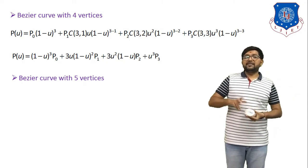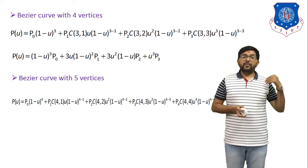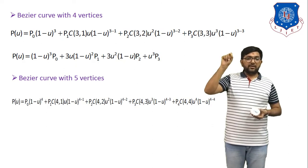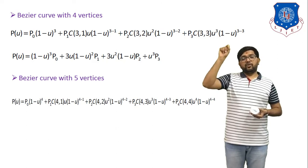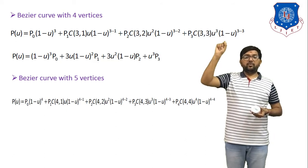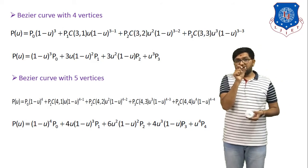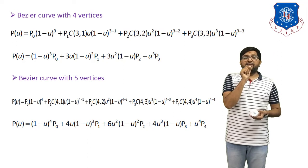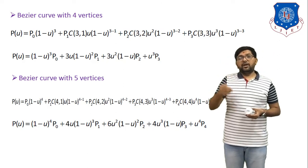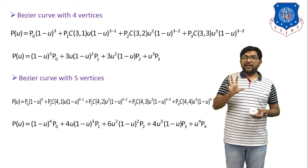For 5 vertices (n = 4), the equation expands as: P(u) = P0·(1−u)⁴ + P1·C(4,1)·u·(1−u)³ + P2·C(4,2)·u²·(1−u)² + P3·C(4,3)·u³·(1−u) + P4·C(4,4)·u⁴. You need to calculate each combination: C(4,1), C(4,2), C(4,3), and C(4,4) using n!/(i!·(n−i)!).